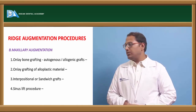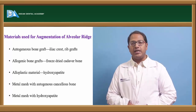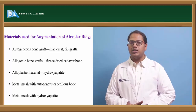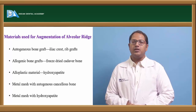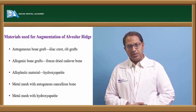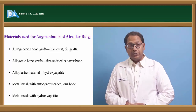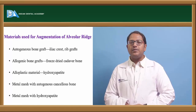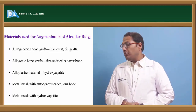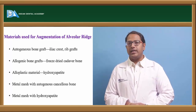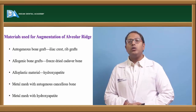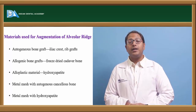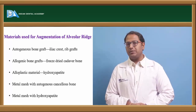There are important material terms to clarify. Autogenous bone graft means using your own graft for yourself — for example, iliac crest graft, rib graft, or symphysis graft. Allogenic means bone from another human — freeze-dried cadaveric bone grafts are used as allogenic bone grafts. Alloplastic refers to materials not from a human being, such as hydroxyapatite crystals. Metal mesh can be combined with autogenous graft or alloplastic materials to provide more strength and retention to the graft when ridge height is very deficient.